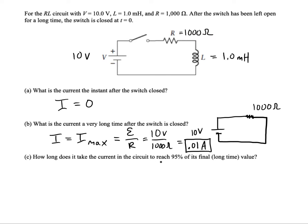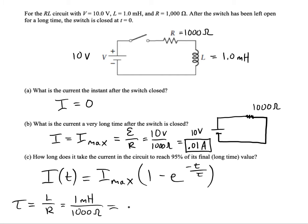How long does it take for the current in this circuit to reach 95% of its final long time value? For that we're going to want to use a formula for RL circuits and how current builds up over time in them. The formula to use would be I equals Imax times one minus E to negative T over tau. For RL circuits we're going to want to use this formula for a time constant: L over R. So we're going to put the inductance on top which was one millihenry and then we'll put a thousand ohms. In the denominator I'm getting one times ten to the minus six seconds.